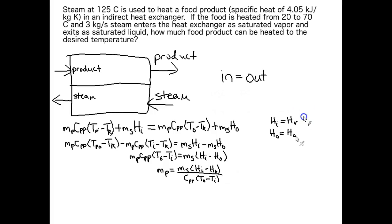So if we look those up in the table, we get that HV is equal to 2713 kilojoules per kilogram. HC is equal to 524.99 kilojoules per kilogram. Notice how much smaller HC is than HV. HV is about four times larger than HC.